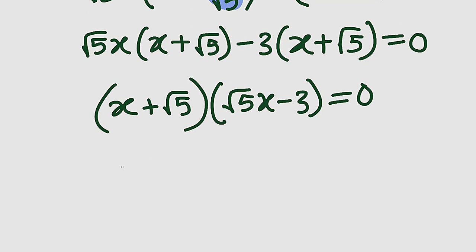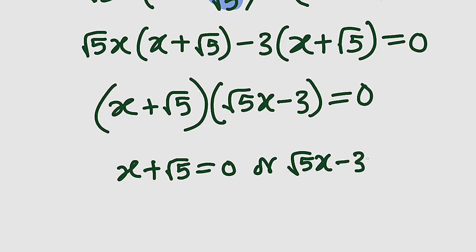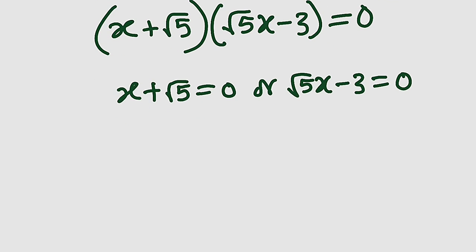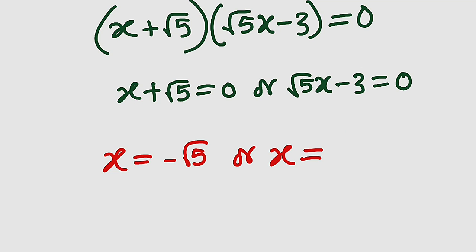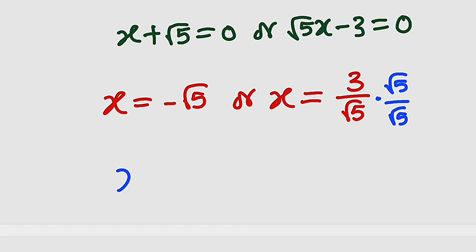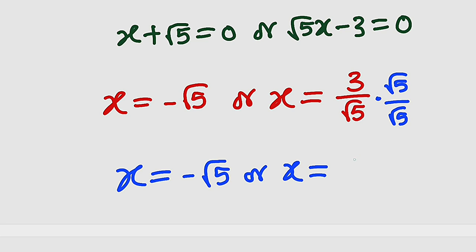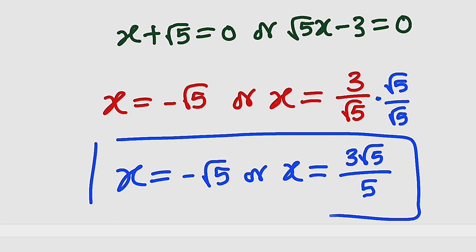We are going to set the two factors equal to 0. Either x plus root 5 equal to 0, or root 5x minus 3 equal to 0. From the first equation, taking root 5 to the other side, x equals negative root 5. From the second, negative 3 crosses over to become positive 3, then divide by root 5. Rationalizing by multiplying top and bottom by root 5 gives 3 root 5 on top and root 25 equals 5 on the bottom. So x could either be negative root 5, or x equal to 3 root 5 divided by 5.